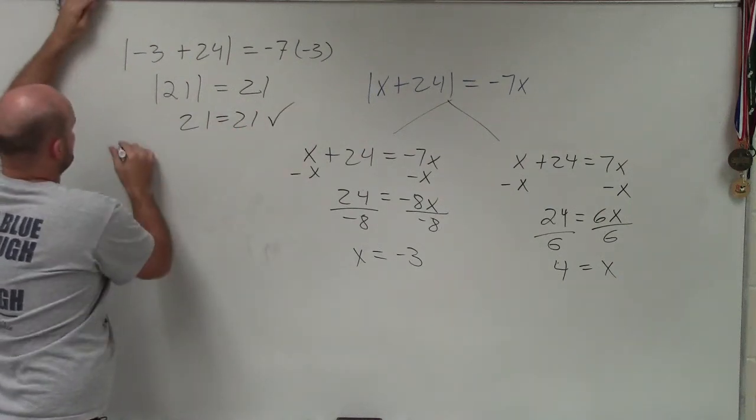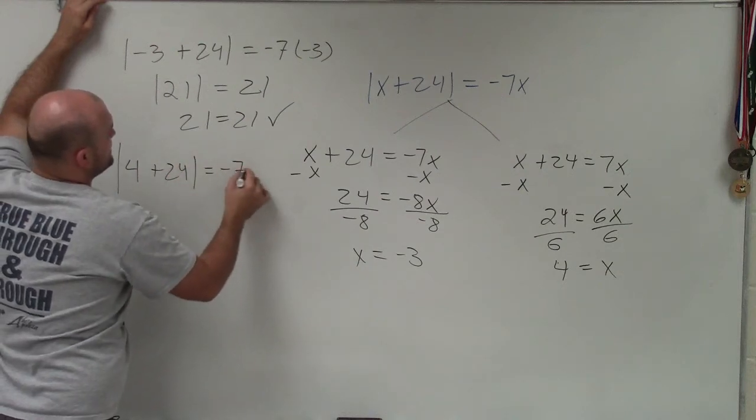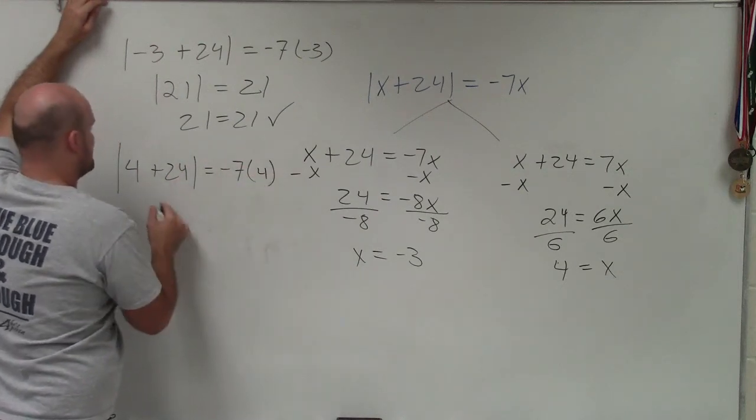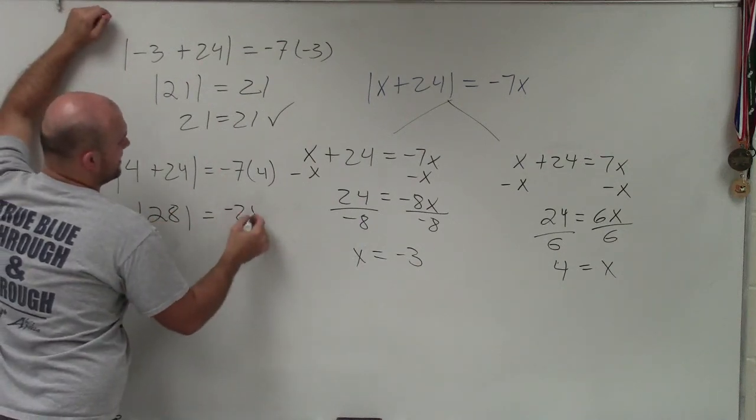Now let's go and check 4. So I do the absolute value of 4 plus 24 is equal to negative 7 times 4. Well, again, 4 plus 24 is the absolute value of 28 is equal to negative 7 times 4 is negative 28.